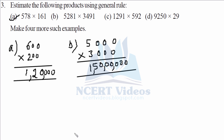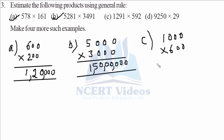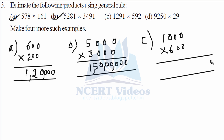For part C, applying the general rule: 1000 multiplied by 592, where 592 is closer to 600. There are five zeros total, so we write five zeros, and then six ones — six. That gives six lakh.